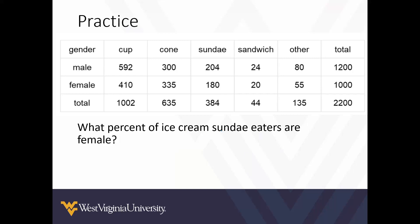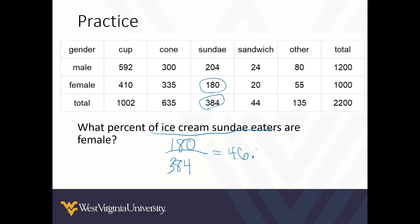What percentage of ice cream sundae eaters are female? Looking at ice cream sundae eaters, 180 of them are female. So of ice cream sundae eaters — condition — 180 divided by the total number of ice cream sundae eaters, which is 384, gives us 0.469, or 46.9%. So of ice cream sundae eaters, 46.9% are female.